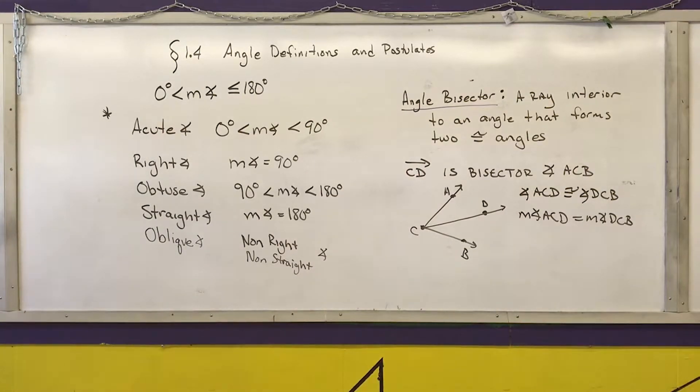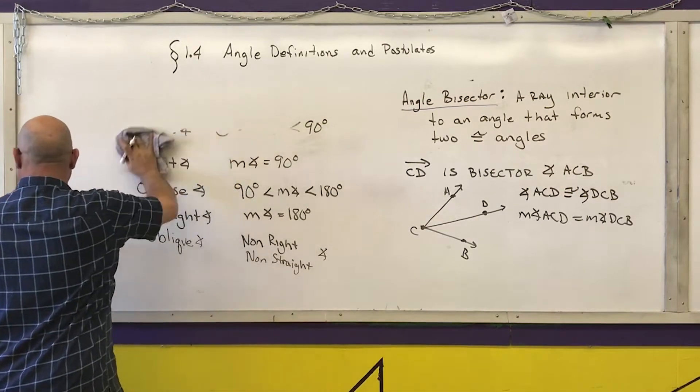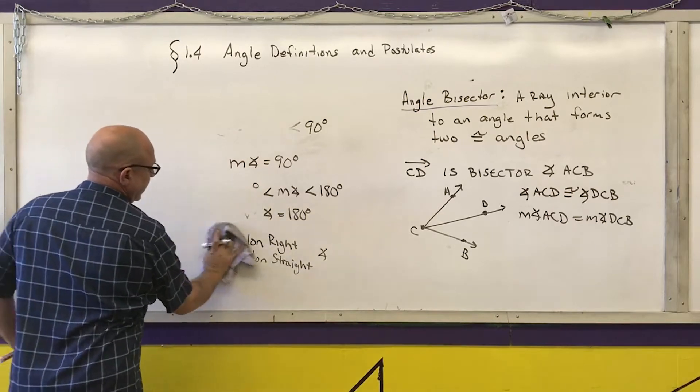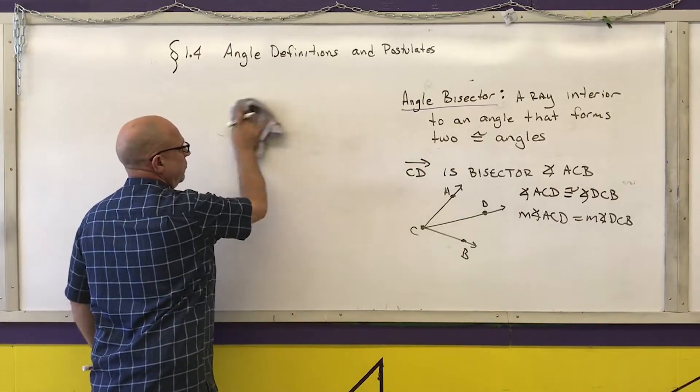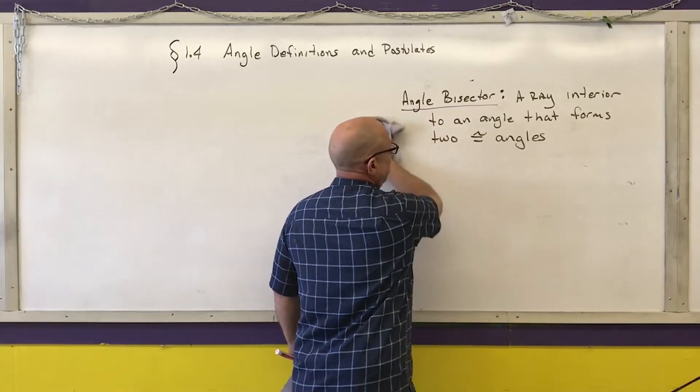So now let's talk about how do I actually get the measurement of angles and this will be our next postulate which is postulate number three. It is on page 24 of your textbook, make sure you copy it word for word and then you use the extra notes that I'm going to write down.